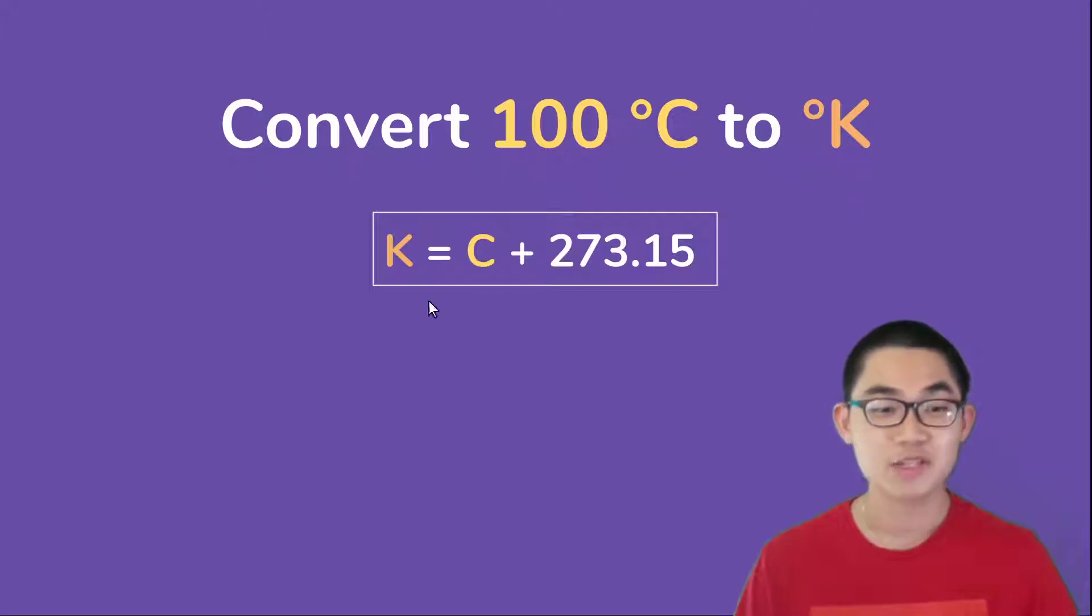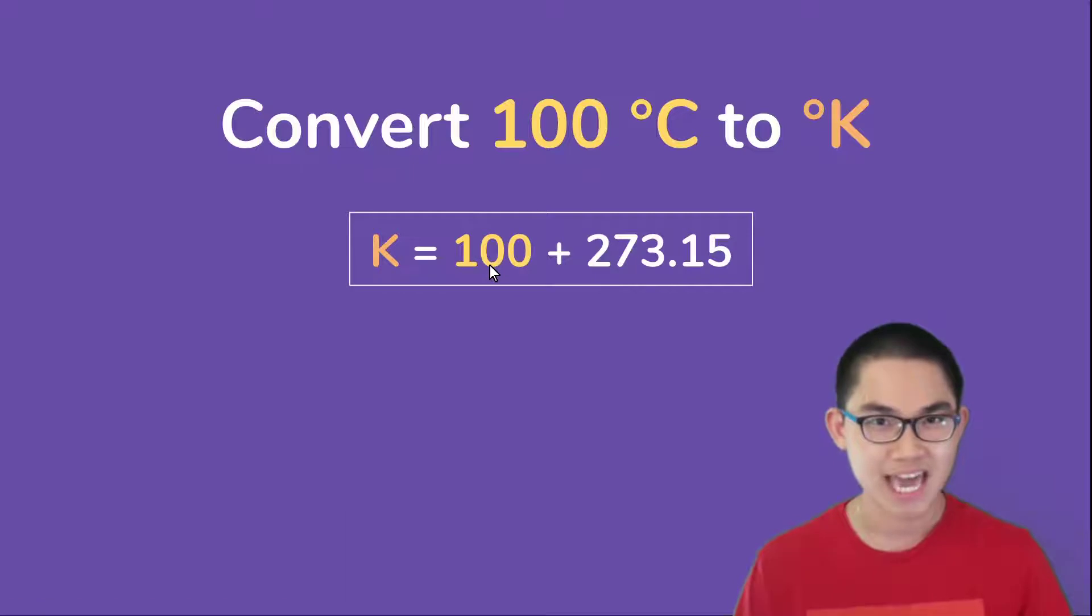All you have to do is use this formula, which says that Kelvin is equal to Celsius plus 273.15. So we know that C is 100, and 100 plus 273.15 is 373.15. So that is it—100 degrees Celsius is equal to 373.15 Kelvin.